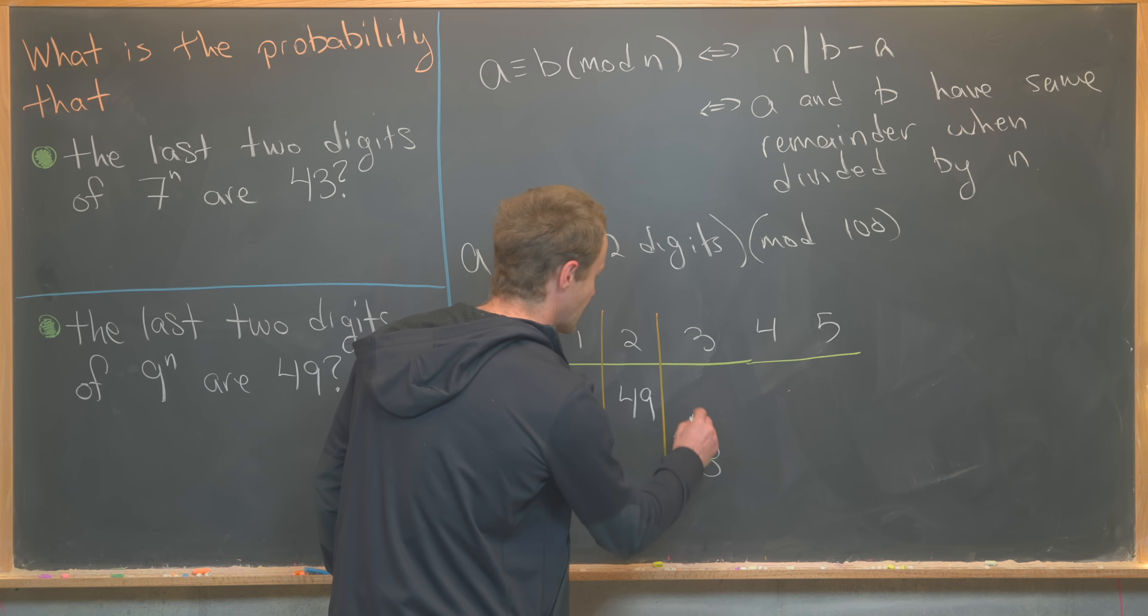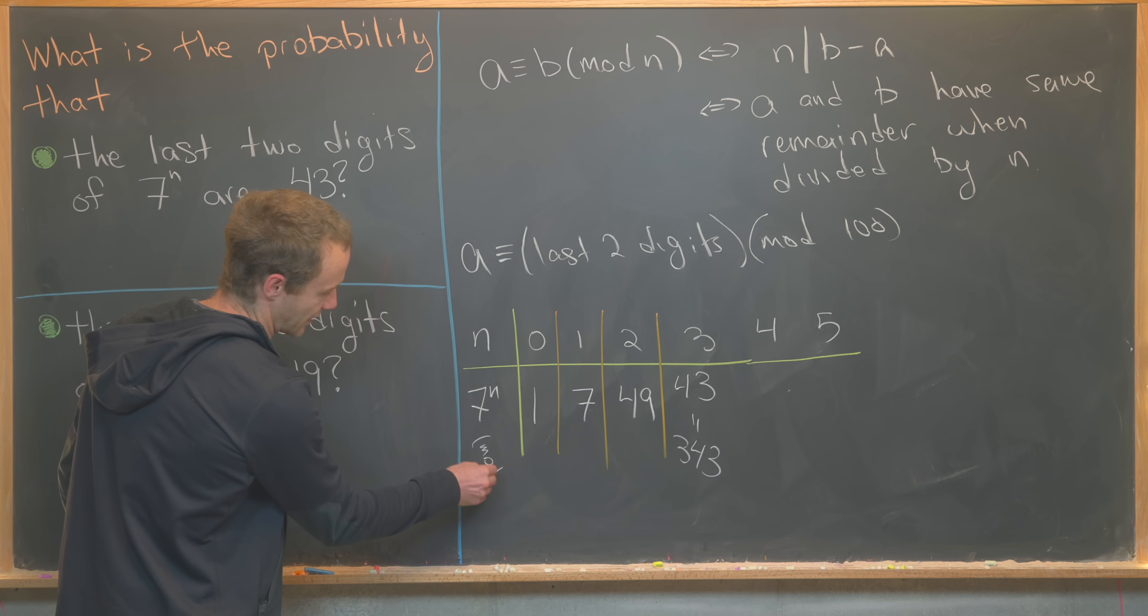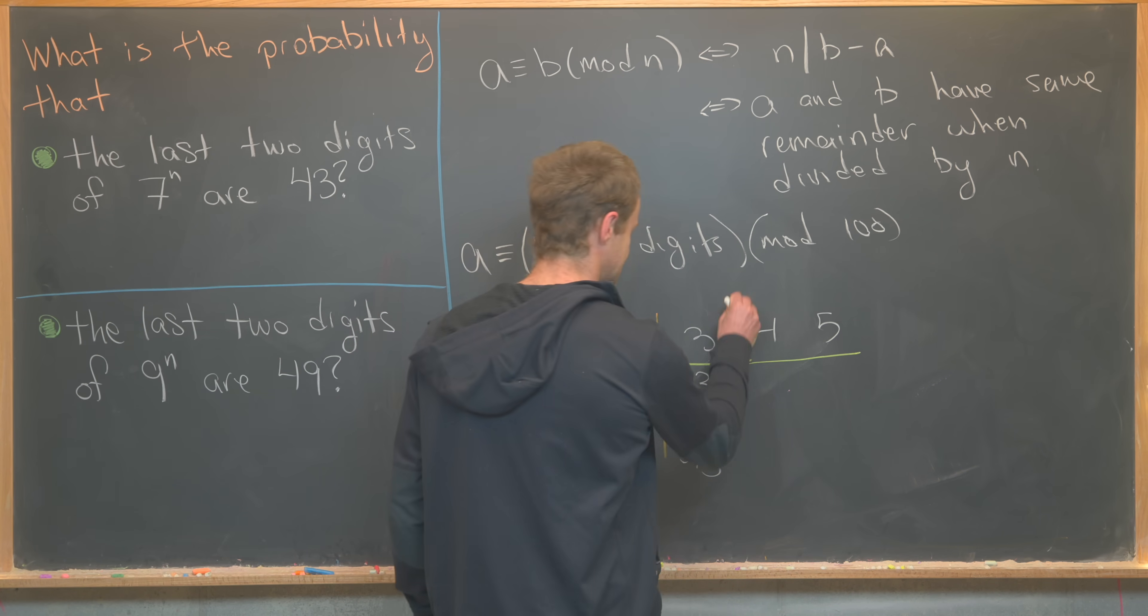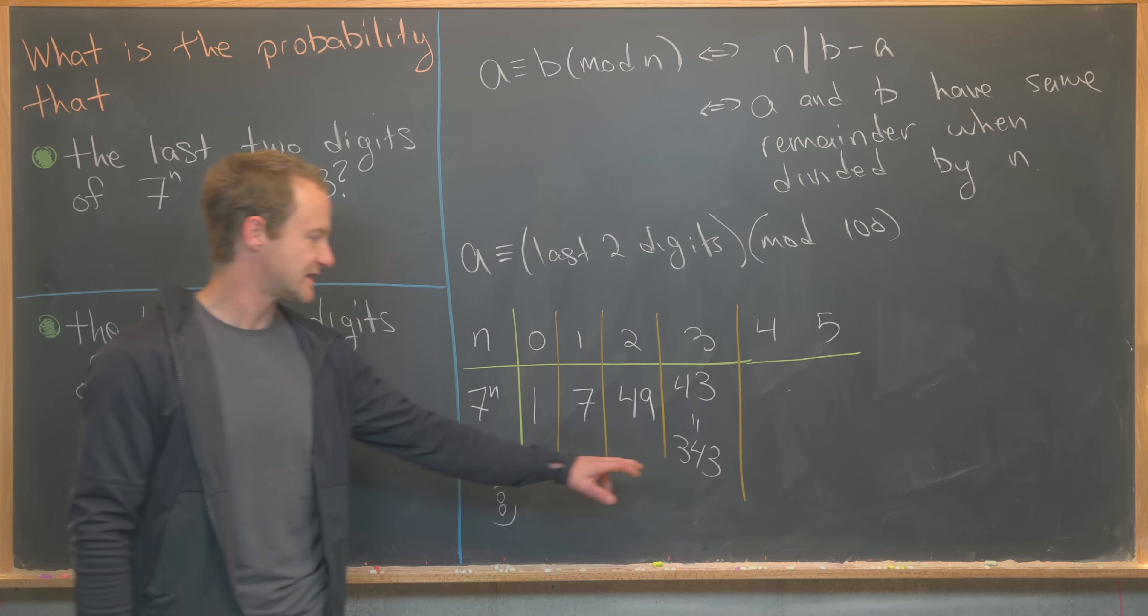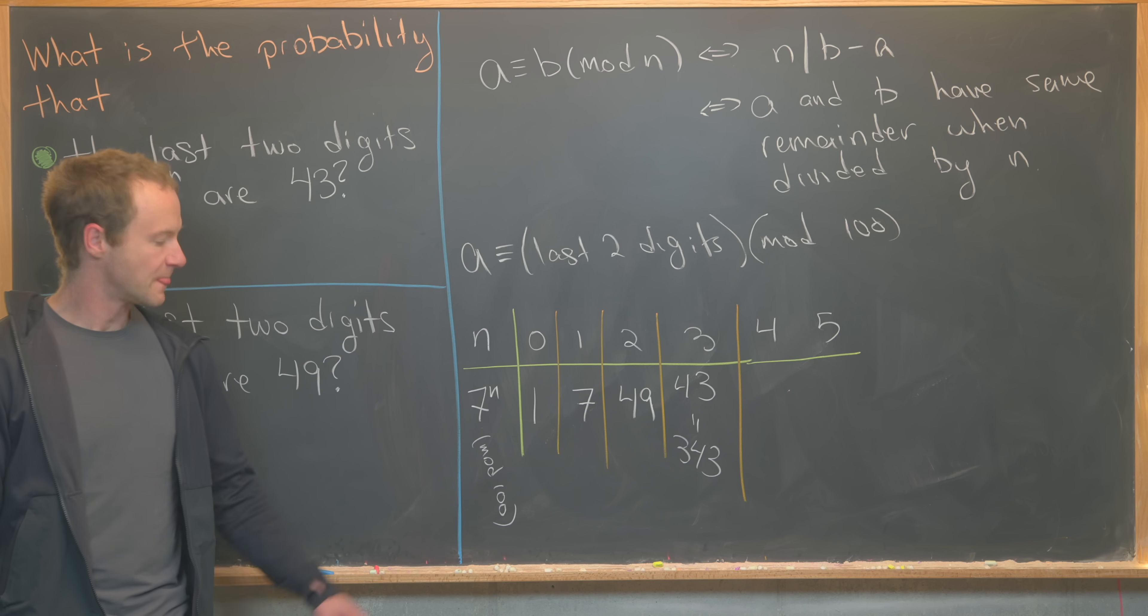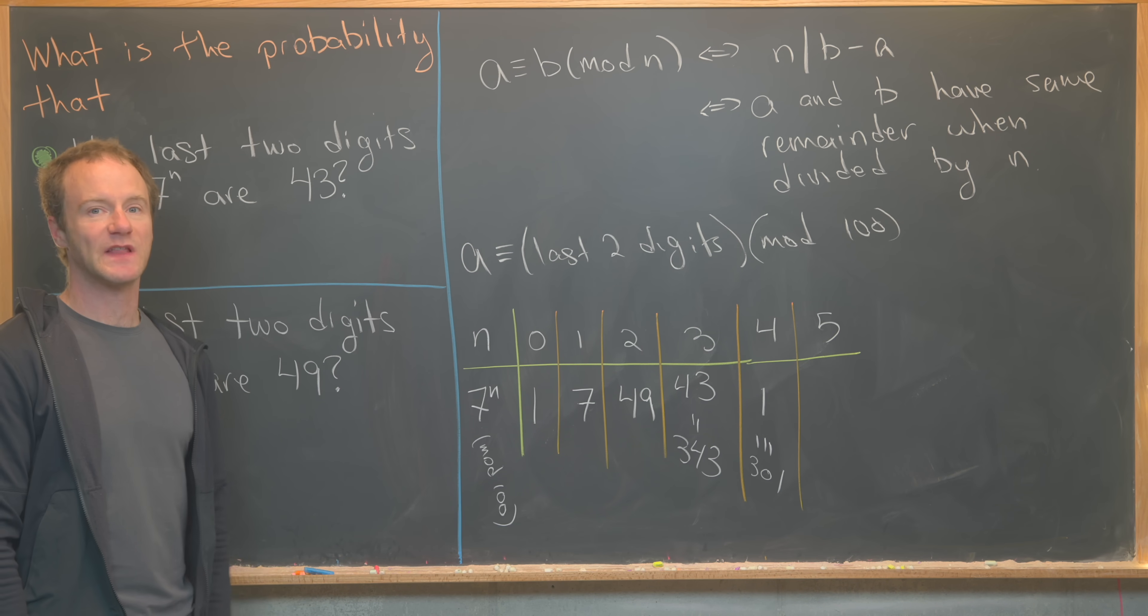But 343 can be replaced with just 43 because we're working mod 100. And now let's calculate 7 to the 4. So we could do 7 times 343, but since we're working mod 100, we'll just do 7 times 43. But that turns out to be 301, but 301 is congruent to 1 mod 100.